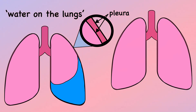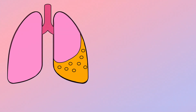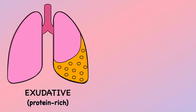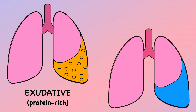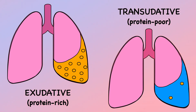Normally, a small amount of fluid is present in the pleura that acts to lubricate and facilitate breathing. Depending on the cause, pleural effusion may be either protein-rich and is called exudative, or protein-poor, called transudative.